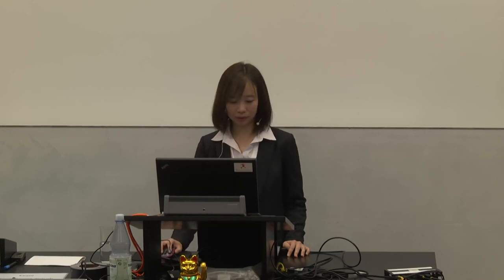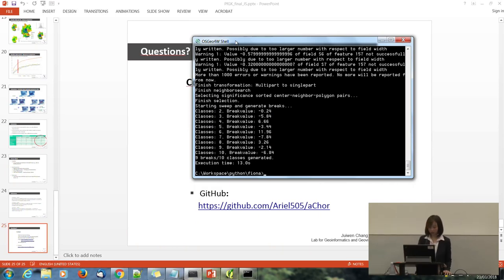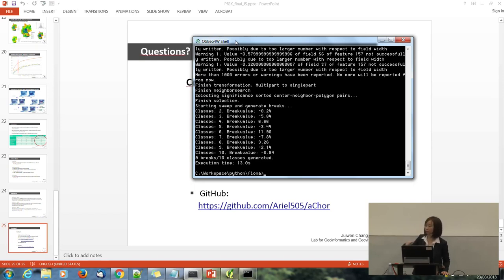What was the 0.2 parameter? It's the sweep interval. For this example — the deprivation index of Hamburg — the value ranges from minus 18 to 20, so it has a bigger range. The sweep goes from the global maximum to the global minimum in steps of 0.2. A bigger interval makes the algorithm run faster, but the result may not be as ideal as with a smaller interval. You can try it out — it's fun.